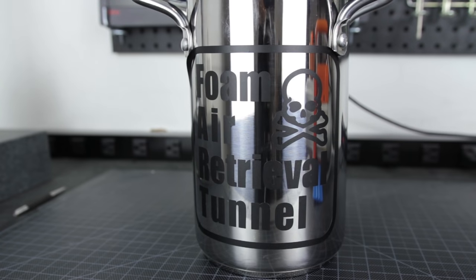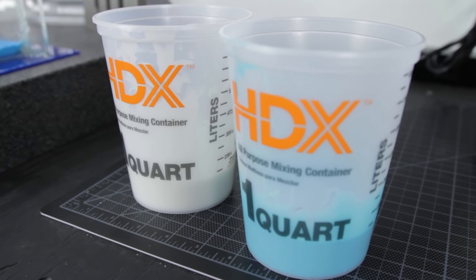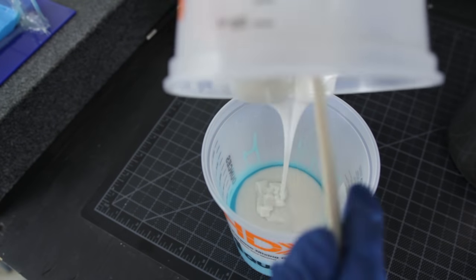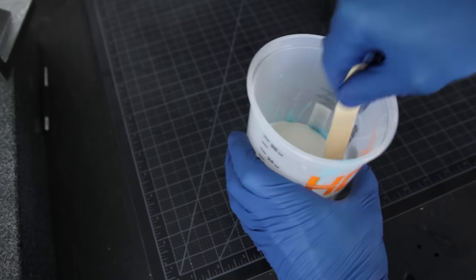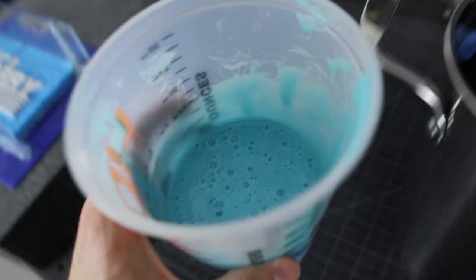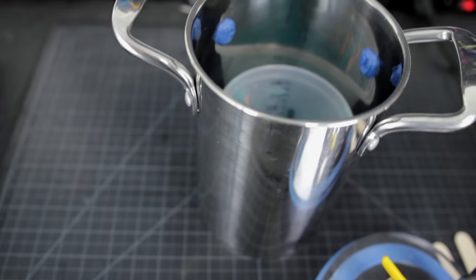Now it's time to test the vacuum chamber. I grab my Part A and Part B platinum silicone and mix vigorously. Once mixed, I put the container in the chamber.